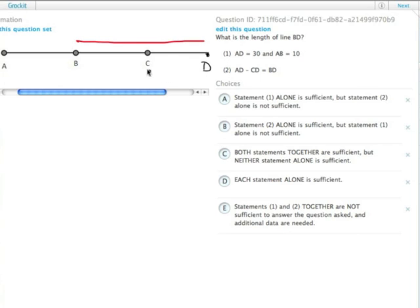Statement one tells us that AD equals 30, so that tells us that the whole line is equal to 30, and AB equals 10.